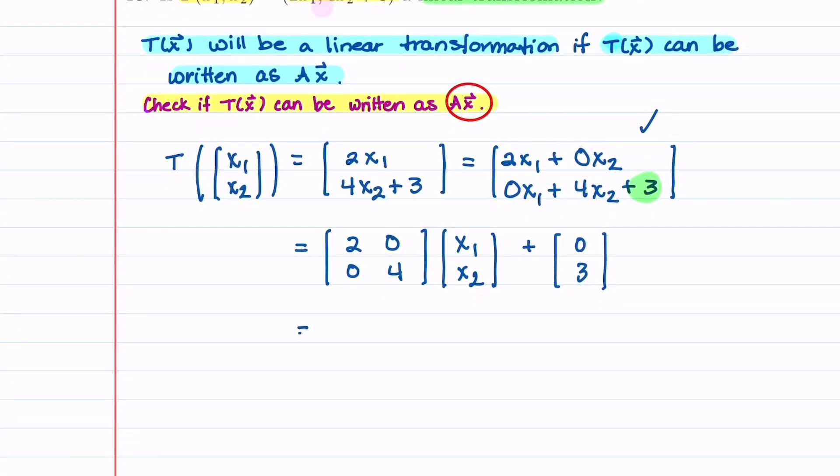So our transformation is A times x but it's not just equal to A times x because we have this extra vector which we can just call vector P. So we can say that our transformation is not equal to A times x because of this additional vector P. Because of this our answer is going to be no, our transformation is not a linear transformation.